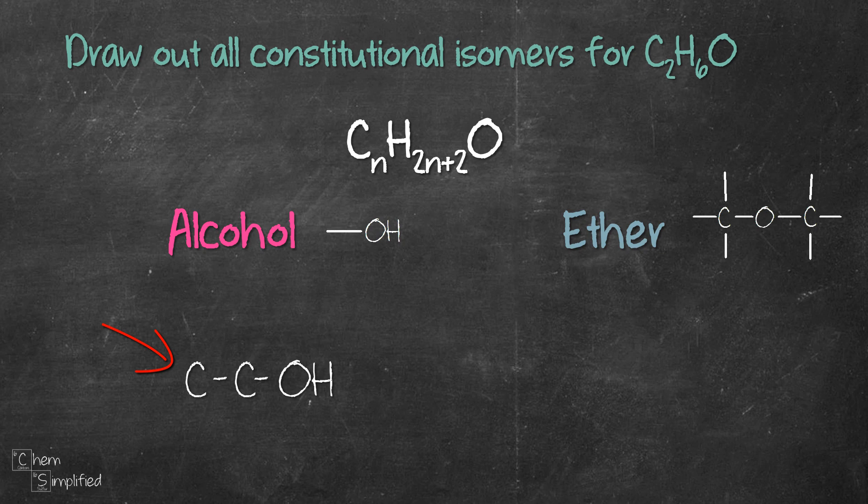This left carbon is only connected to one carbon. Since carbon makes four bonds, it will connect to three hydrogens like this. The next carbon is connected to one carbon and one oxygen, so that's two bonds already. That means there are two remaining bonds on that carbon and will connect to hydrogens like this.